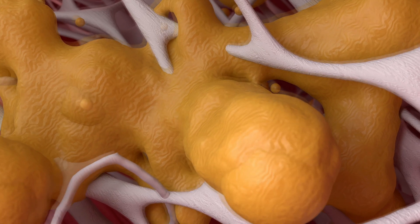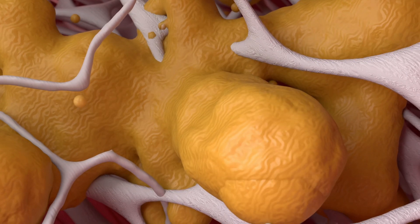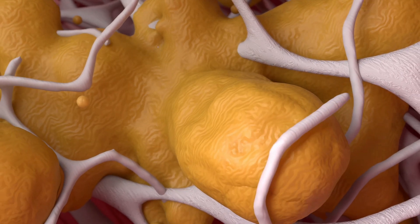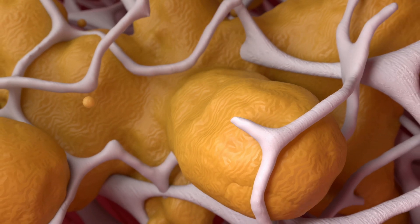Thus, cellular detritus, large numbers of foamy macrophages, collagen fibers, and cholesterol crystals form the bulk of the atherosclerotic plaque.